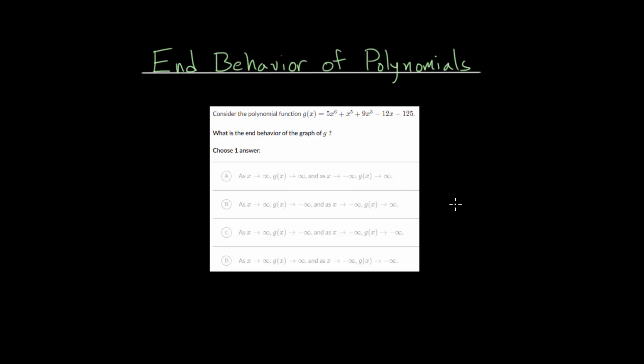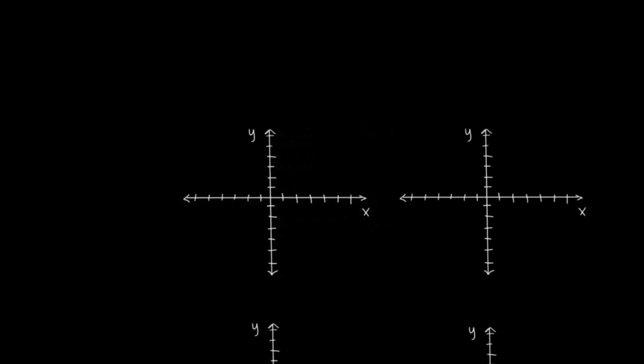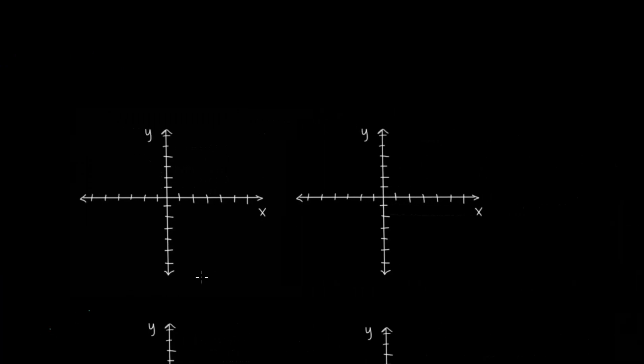Now to answer those questions, what we first need to look at are what we call the parent functions to polynomials. So let's make some space and look at these coordinate planes I've drawn here. And we're going to look at several different examples.